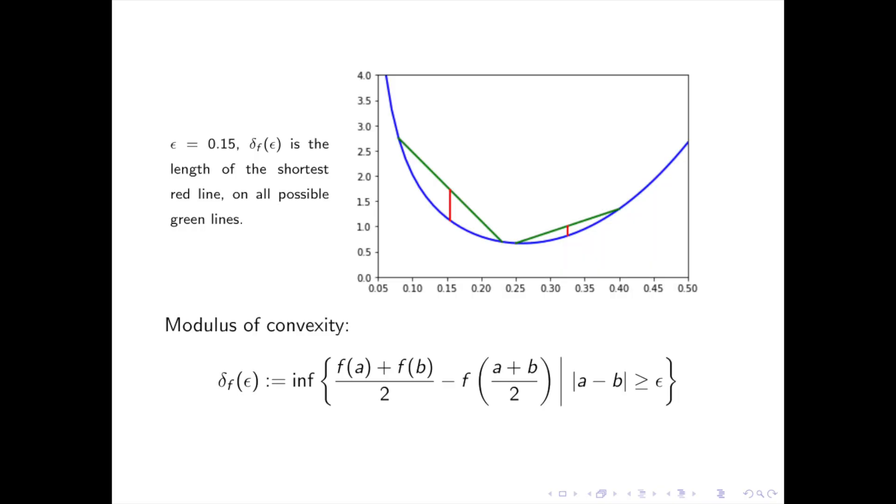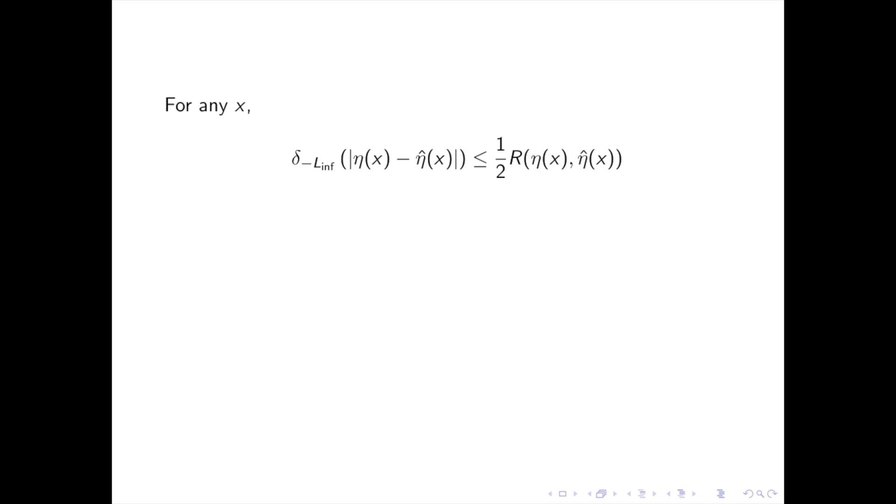The novelty of this paper is to provide a bound based on the modulus of convexity. So for any convex function f, the modulus of convexity is a type of measure of a curvature of f and therefore of its degree of convexity. On the plot, it corresponds to the length of the shortest red line. Now, the negative pointwise bias risk minus L infimum is convex and therefore its modulus of convexity is well defined. The first technical result of a paper is to bound the modulus of convexity of the absolute value of eta of x minus eta hat of x by the pointwise regret at x.